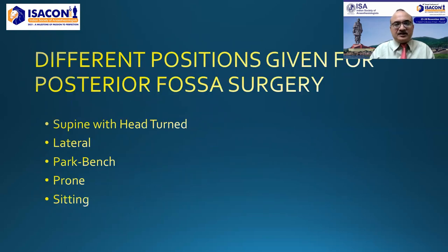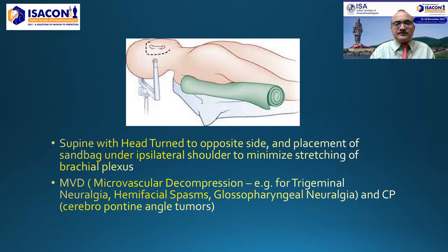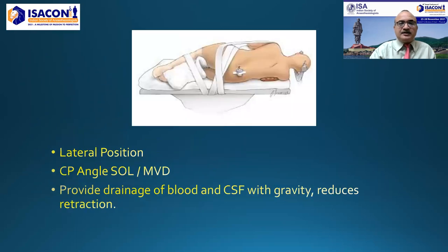Different positions for posterior fossa surgery include: supine with head turn, lateral park bench position, prone, and most importantly the sitting position. The supine position with the head turned to the opposite side and a sandbag under the ipsilateral shoulder minimizes brachial plexus stretching. This is mainly utilized for microvascular decompression, such as for trigeminal neuralgia, hemifacial spasm, and glossopharyngeal neuralgia, as well as CP angle tumors.